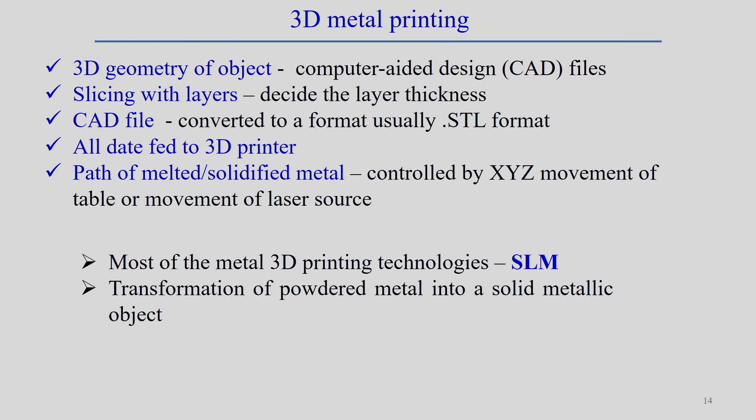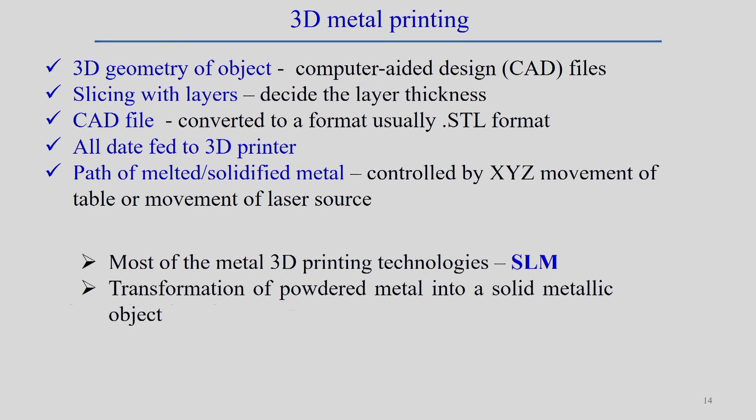Most metal 3D printing has so far been developed around selective laser melting, which is now in a relatively mature state. In SLM, metallic powder is transformed into a solid metallic object. Selective laser sintering uses a laser as a power source to sinter powder material — mainly polymers — allowing sintering below the melting point to bind the material together and create a solid structure. It is mainly used for rapid prototyping and low-volume production.